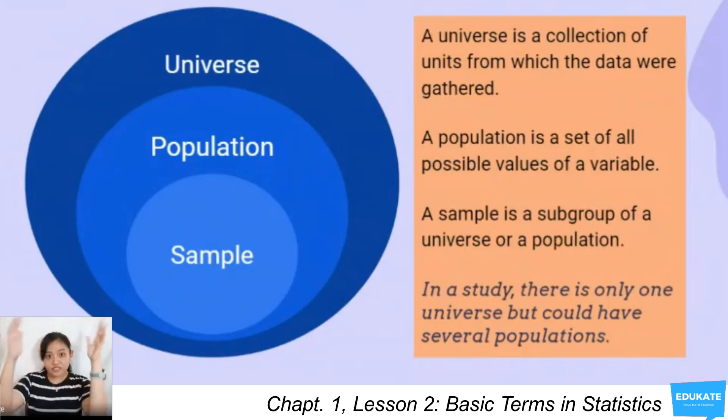For example, our universe is Quezon City Science High School students. Our population can be grade 11 students. Our sample can be grade 11 Einstein students or grade 11 Darwin students or grade 11 Curie students. In a study, there is only one universe, but could have several populations or several samples.